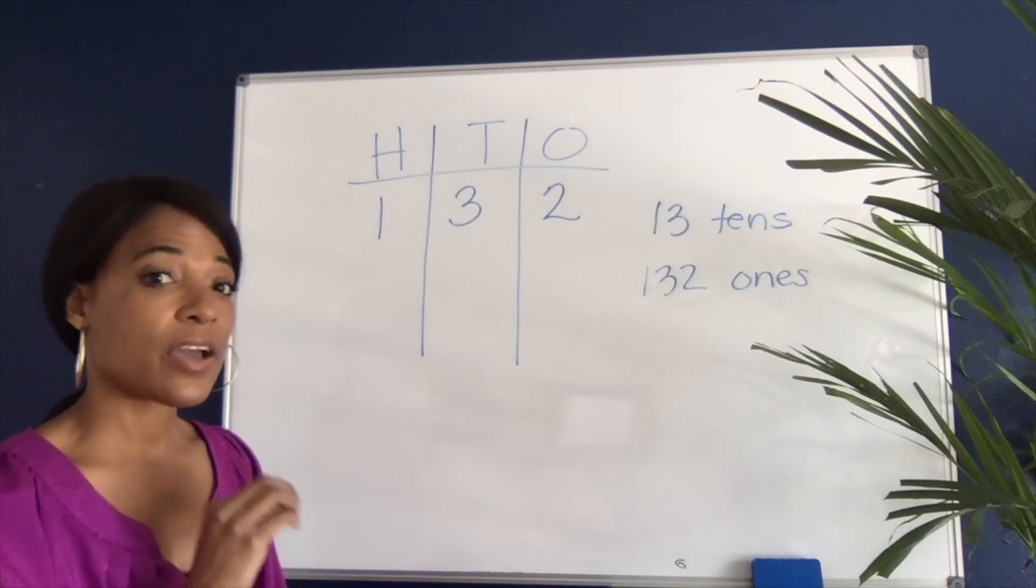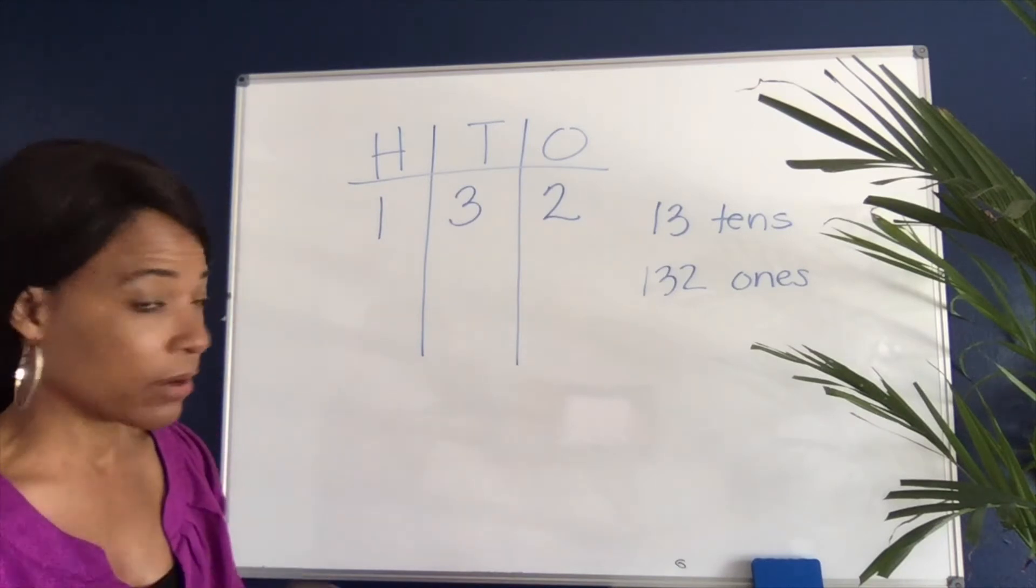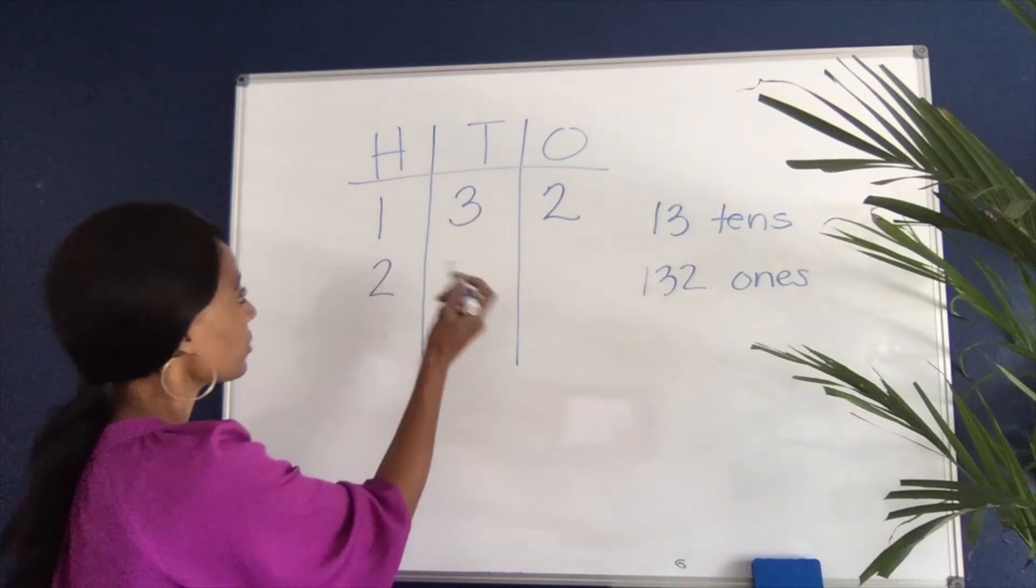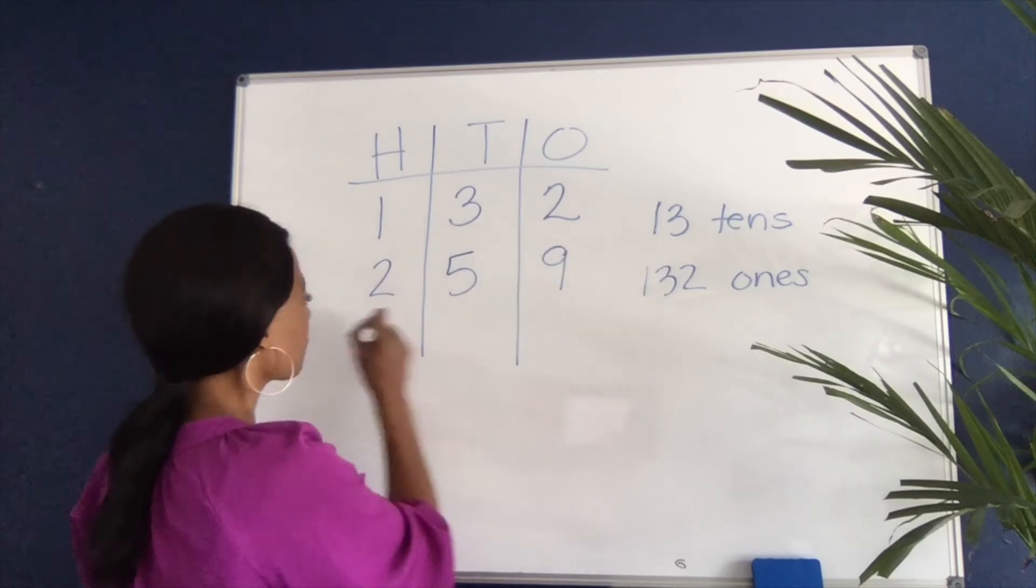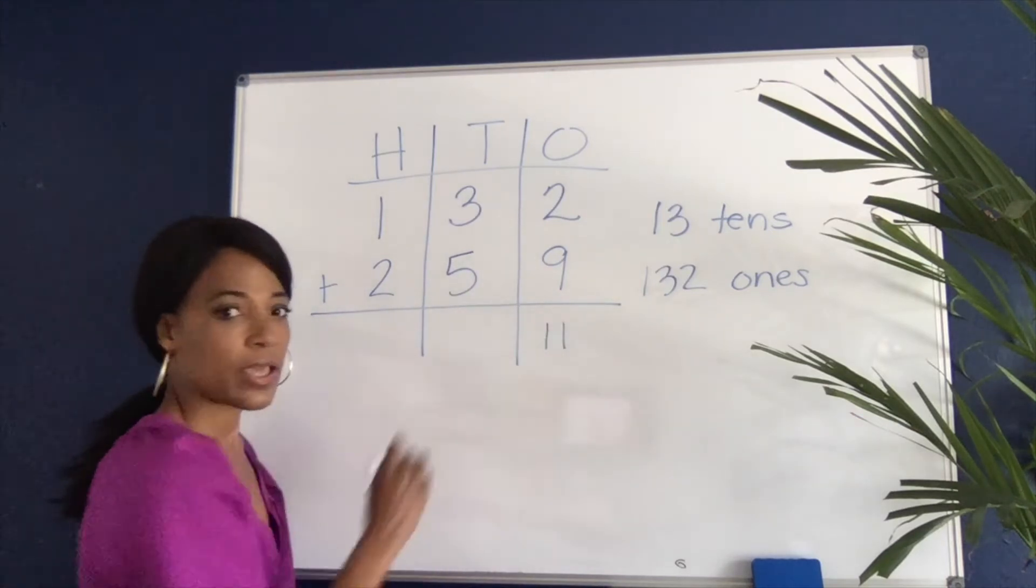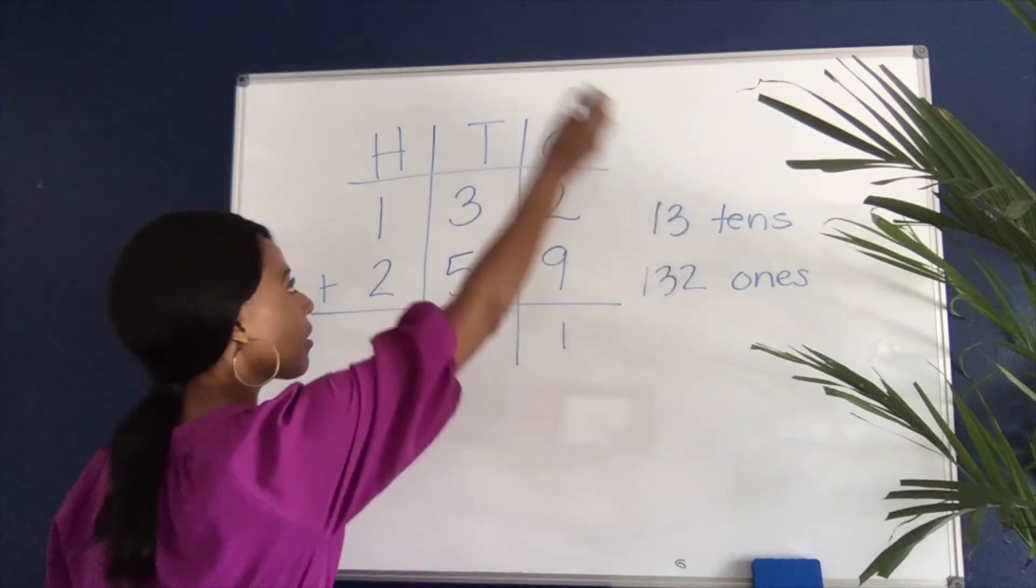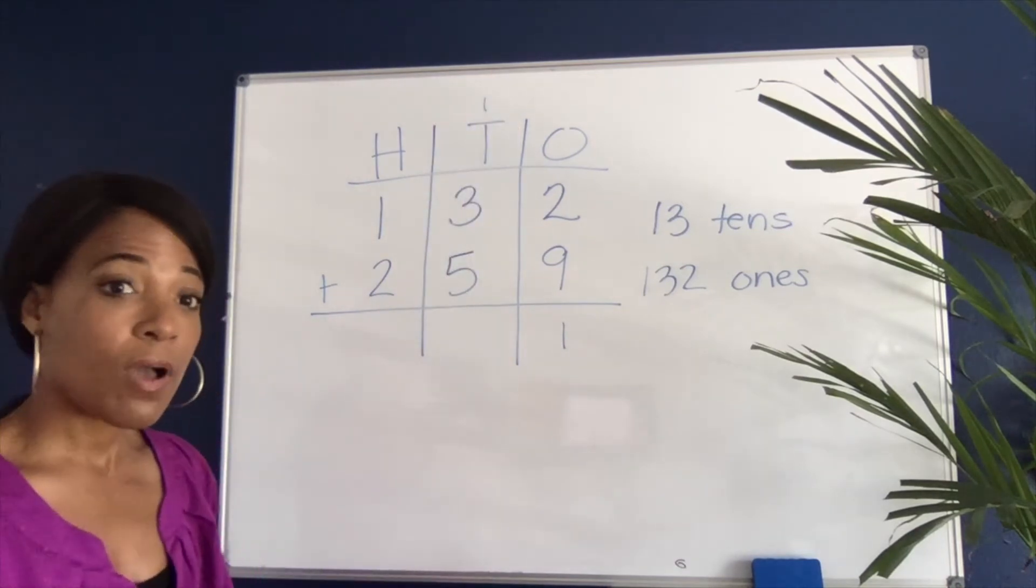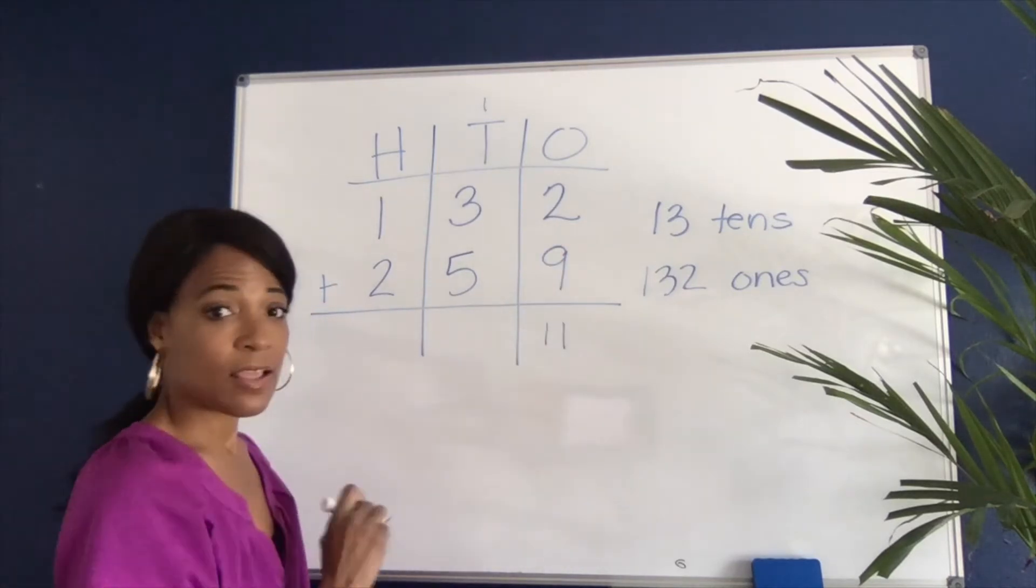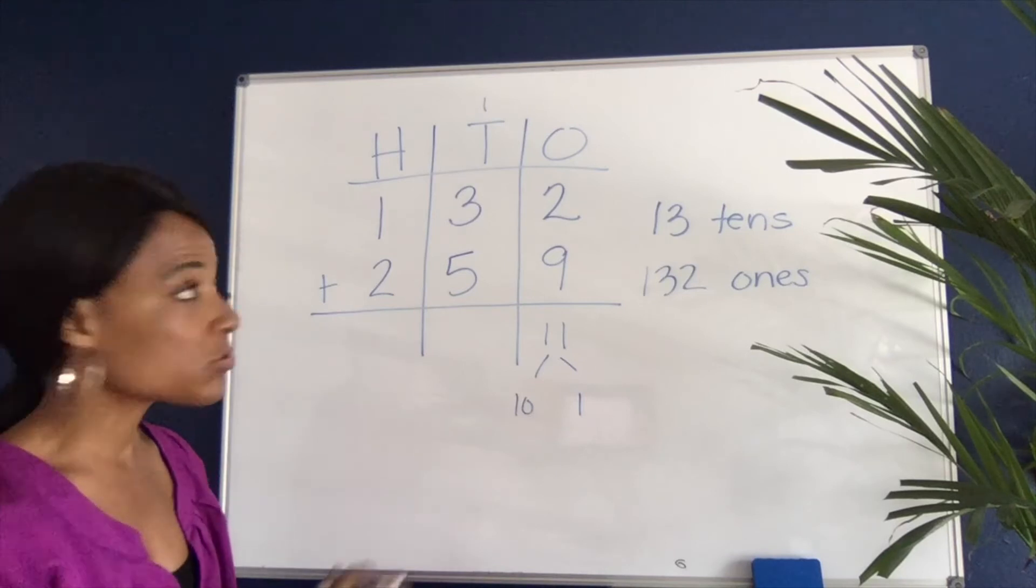Another thing we want to be mindful of is carrying the one. For example, if we were to add 132 to 259, students would typically add these numbers up and end up with 11, and they've been told over and over you can't have two digits in the ones place so you have to carry the one. Problem is, that's not a one—that's a 10. If 2 and 9 equals 11, that means this one here represents a 10 and this one represents a group of one.